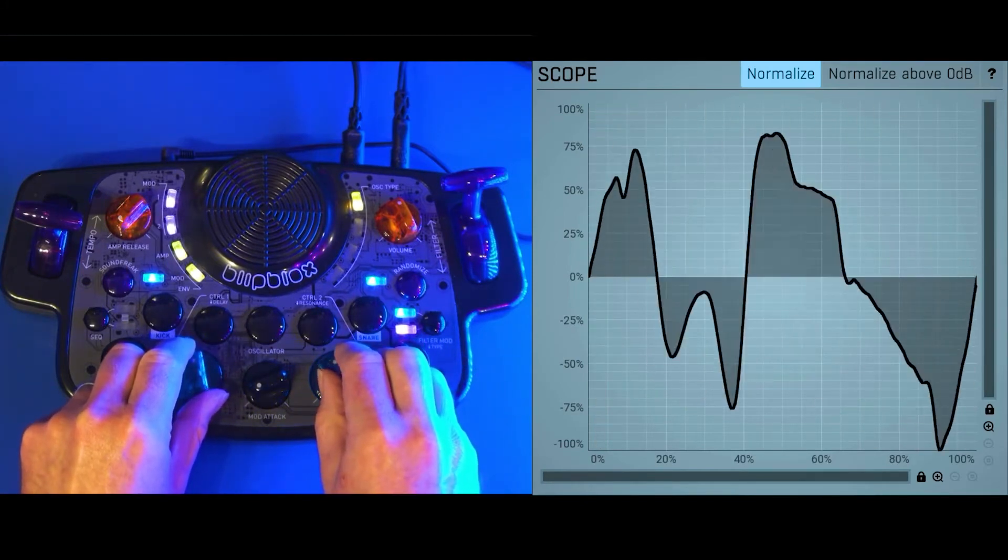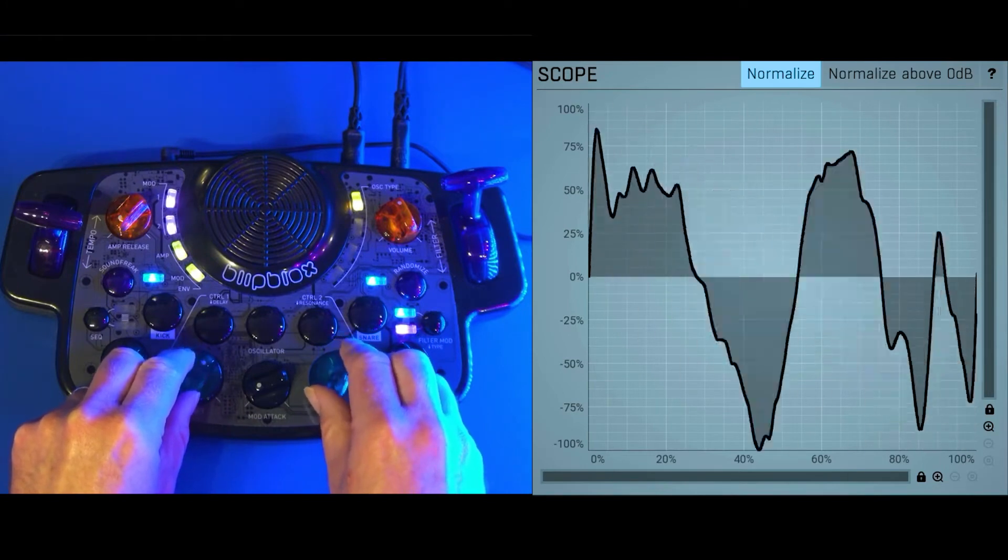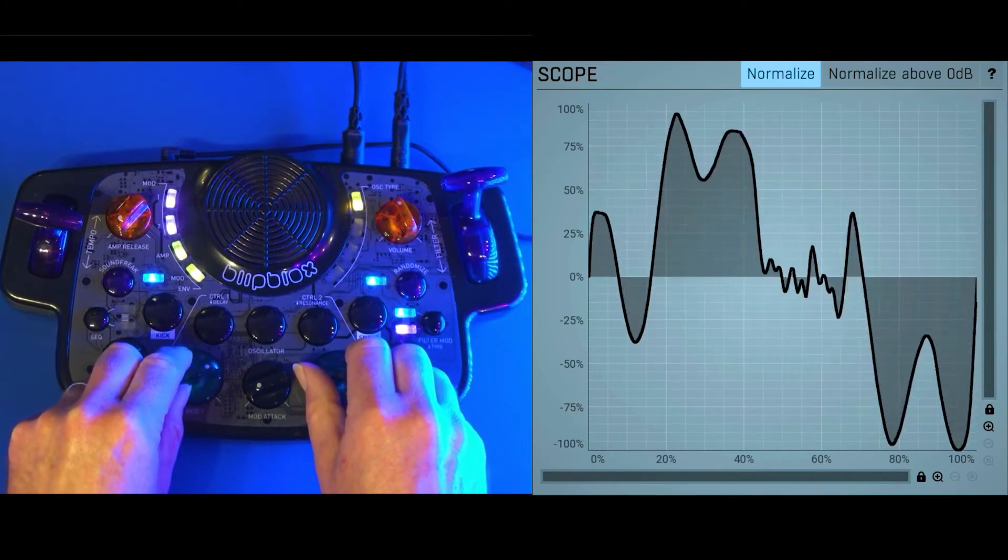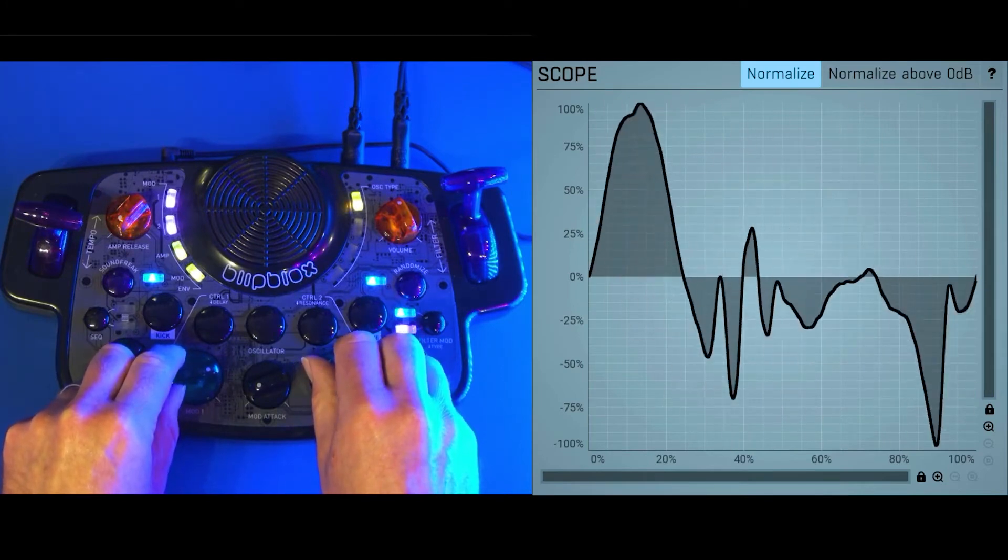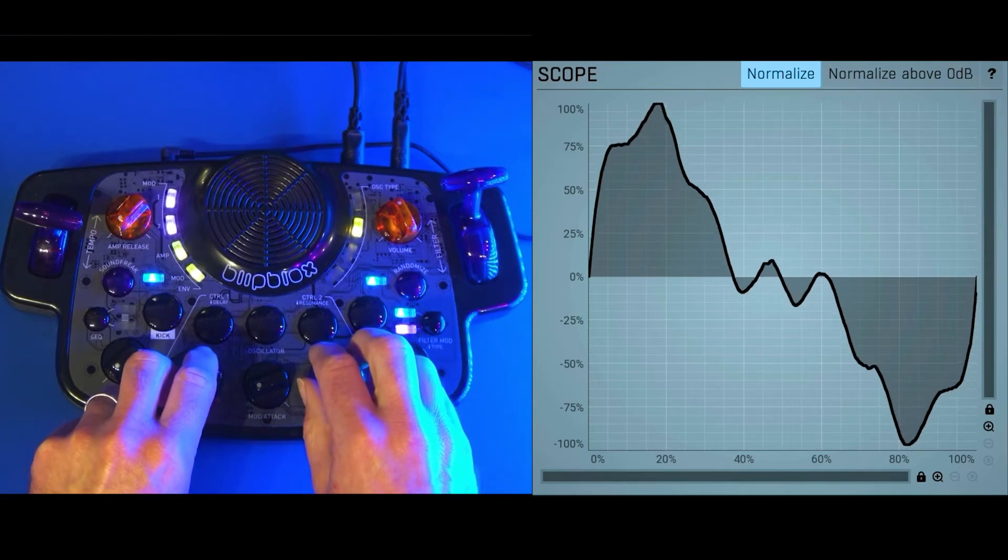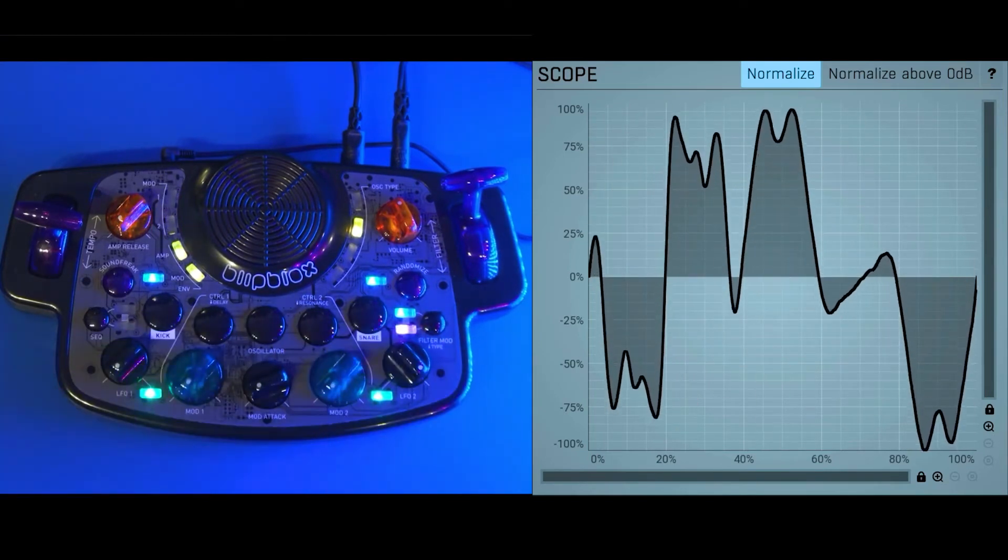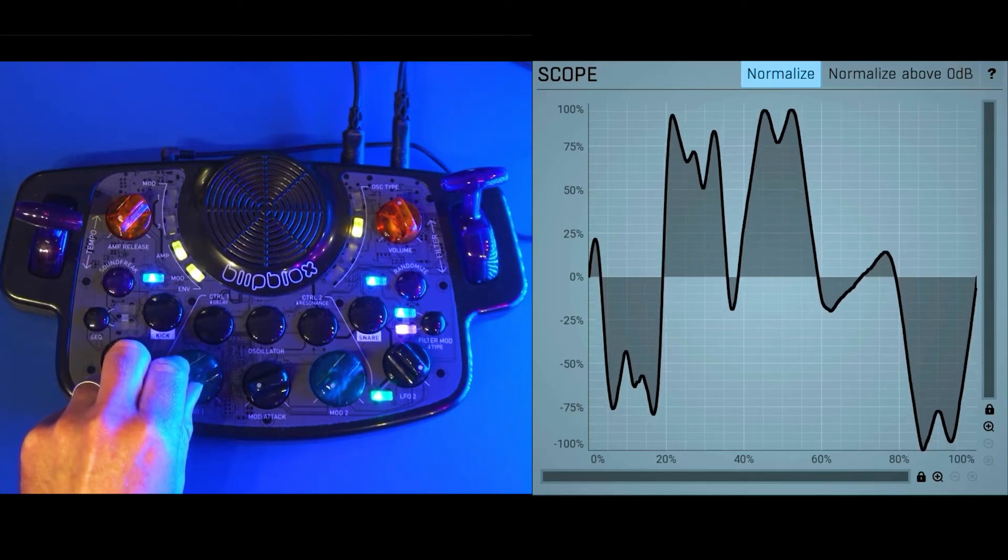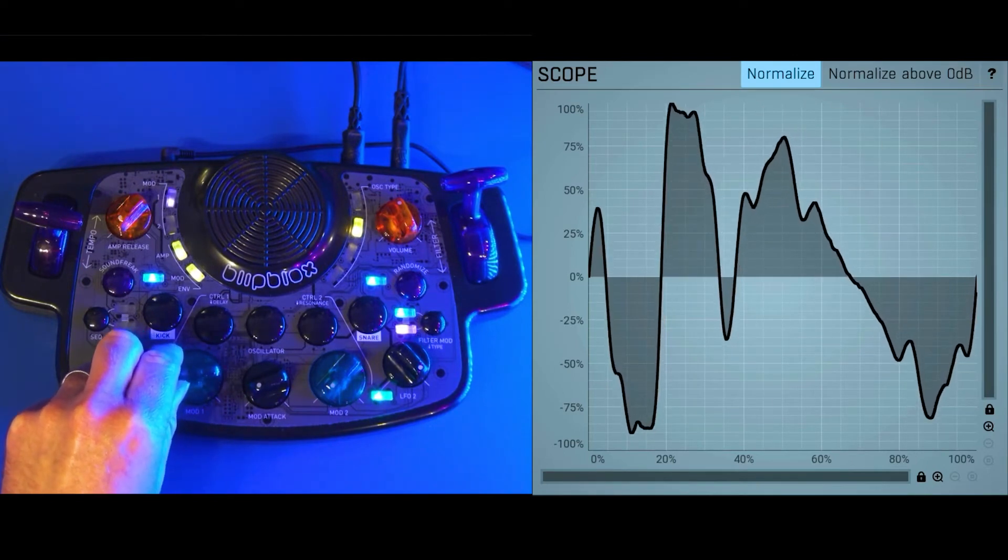Let's see if we can lock into one here. So that's a pretty good one. So here we have, this is a waveform that's actually stored in the memory of the Blip Blocks and it's played out with the different frequencies.